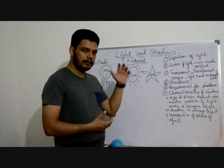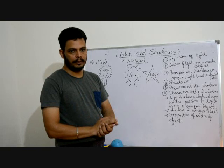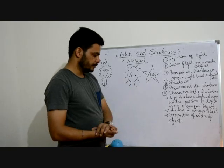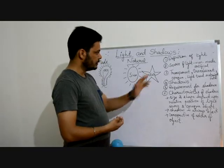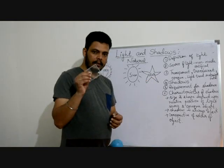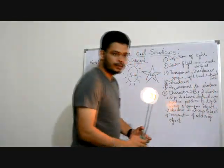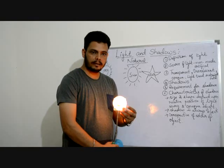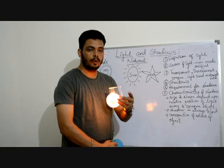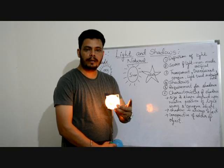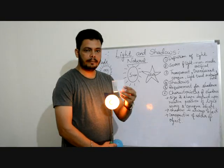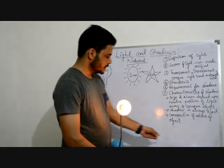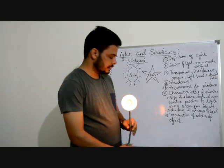Based on light, objects can be of three types: transparent, translucent, and opaque. Let's start with transparent objects. If I have this object and a light source and take it in front of it, light is going through it. All those objects which allow light to pass through them are known as transparent — for example, a sheet of glass, this special type of plastic, and water.